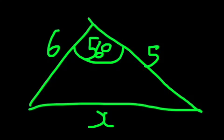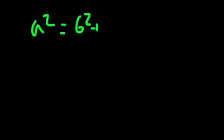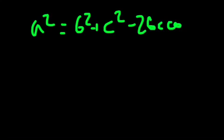So the cosine rule, and you have to remember this, is a squared equals b squared plus c squared minus 2bc cos A.